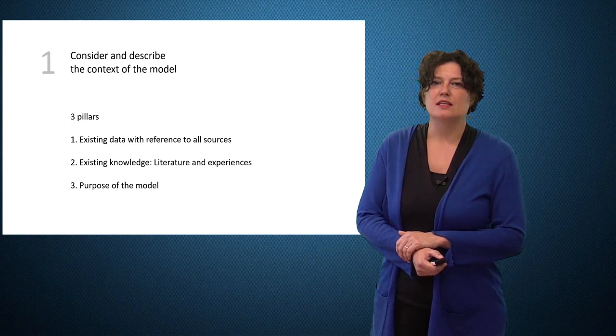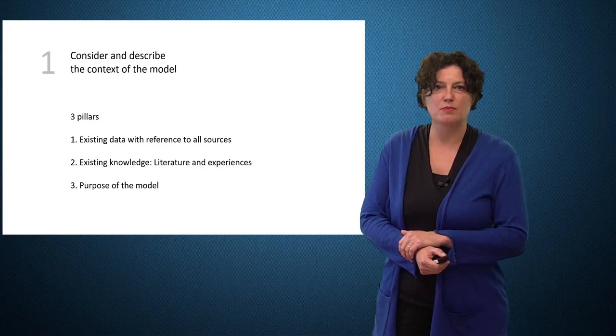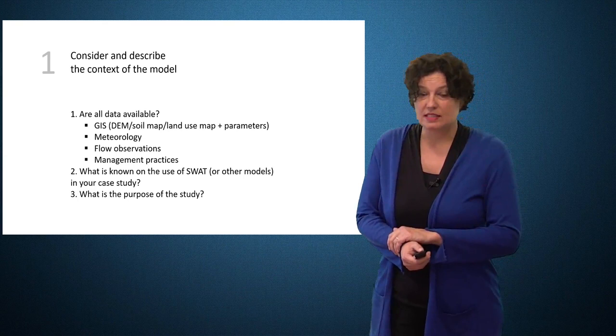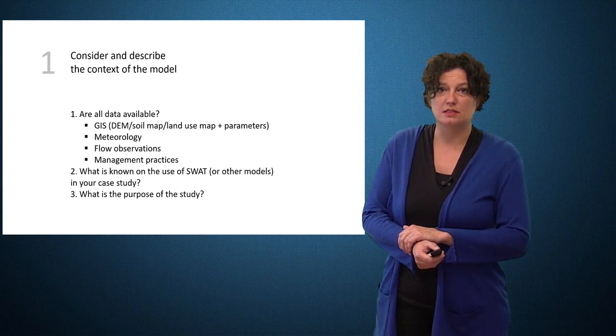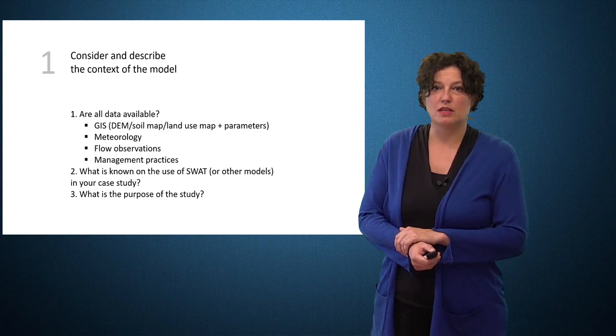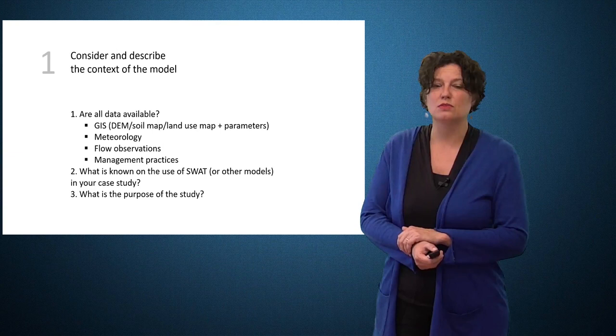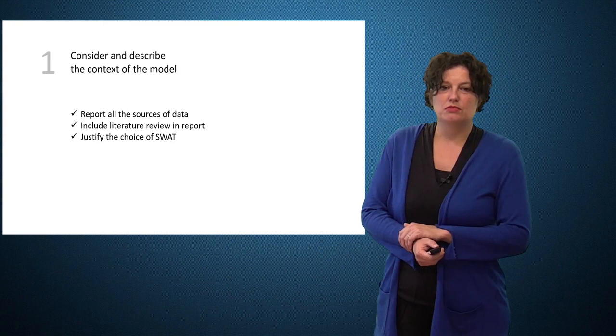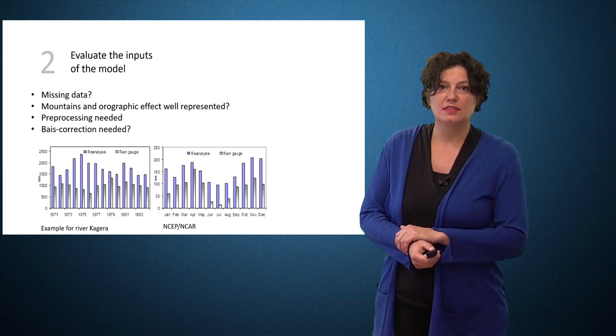The first commandment is that the context should be well understood and well described. This consists of listing the data, giving an overview of the existing knowledge and clearly describing the purpose of the model. All the data should be described as well as the metadata and also the missing data should be mentioned. Sometimes preprocessing is recommended. For instance, to calculate aerial rainfall in sub-basins. It is important to know if all basic data are available for SWAT applications. There should be a good overview of SWAT applications in the case study of the region. It is important to reflect whether SWAT is a good tool for the purpose of the study. So to summarize, it is important that you should report on all the sources of the data, that you should include a literature review and that you also justify the choice of SWAT.